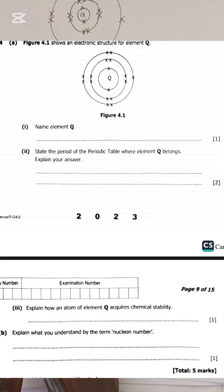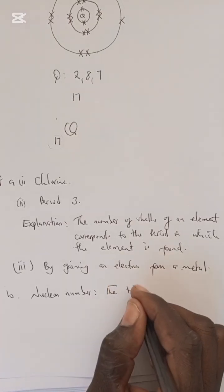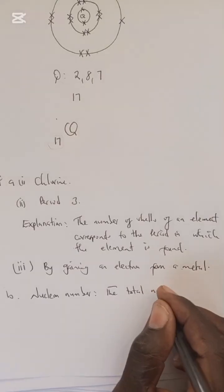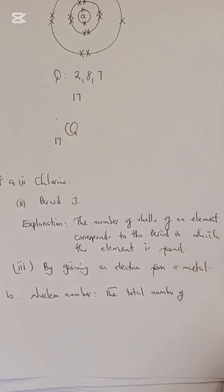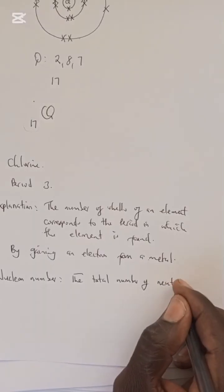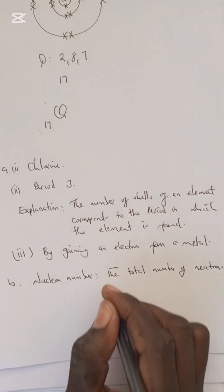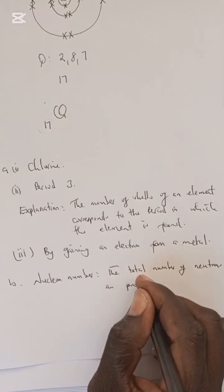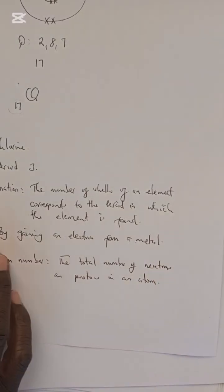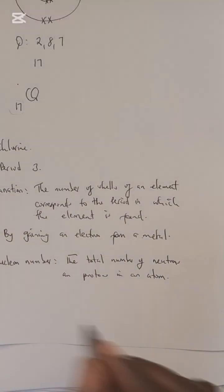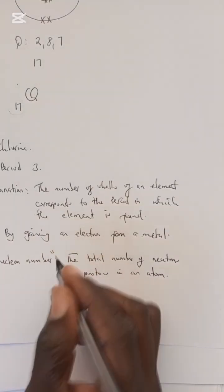The last question, which is question B, reads: explain what you understand by the term nuclear number. So a nuclear number is the total number of protons and neutrons in the nucleus of an atom. That is what we call a nuclear number, and this nuclear number is basically found in the nucleus. So from the word nucleus, translate or converted to nuclear, talking about what is found in the nucleus.